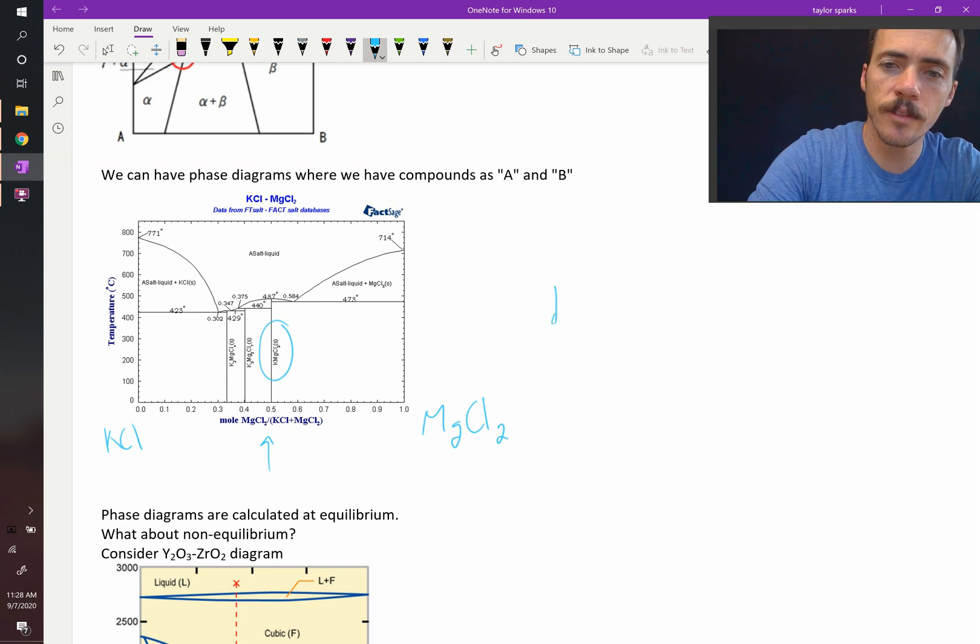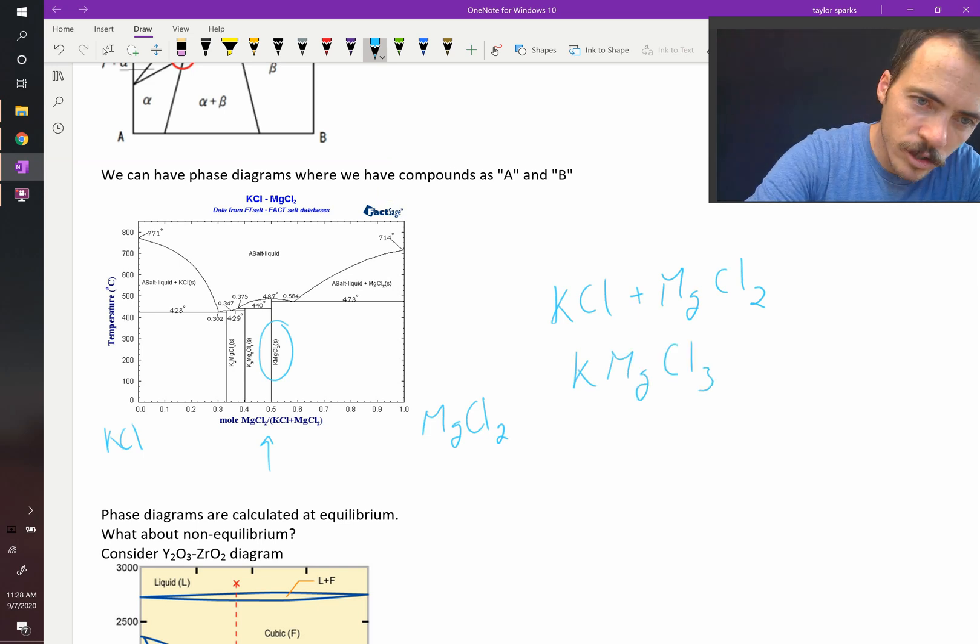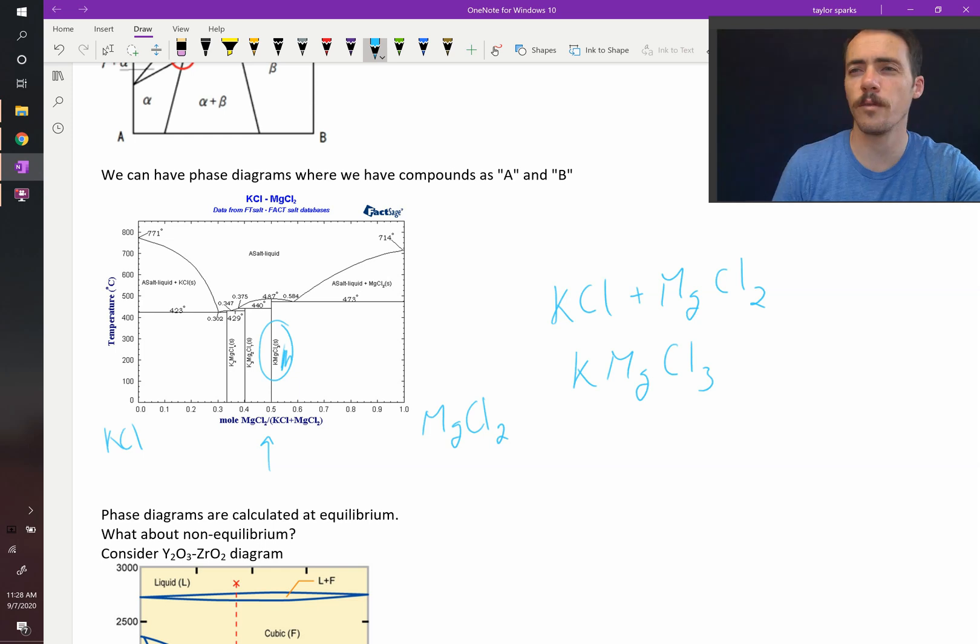So if you just add those up, KCl plus MgCl2, we should have KMgCl3. And sure enough, that's what we've got here. KMgCl3 is the compound that forms there.